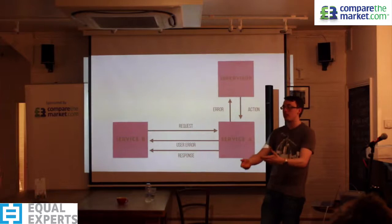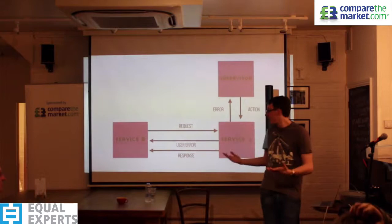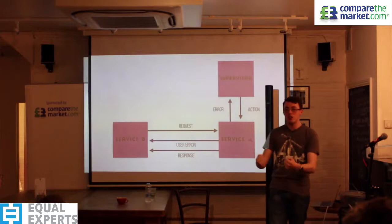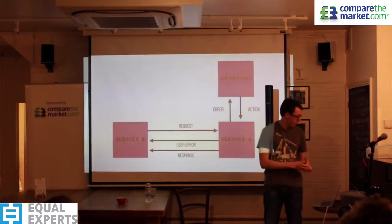Sometimes Service B receives something that just doesn't make sense — a bad email or bad format — where the user has done something wrong. In that case, Service A responds not with an exception but with a message saying 'you've made a mistake here, fix this and I'll respond appropriately.' We separate what's important to the user from the internal errors we handle ourselves — that's the key point of how resilience works within Akka.NET.